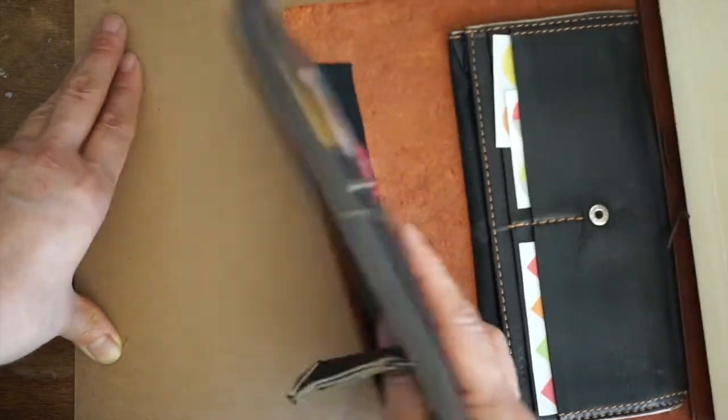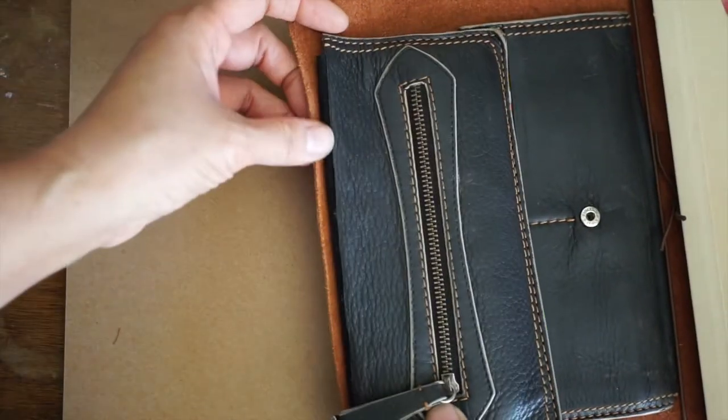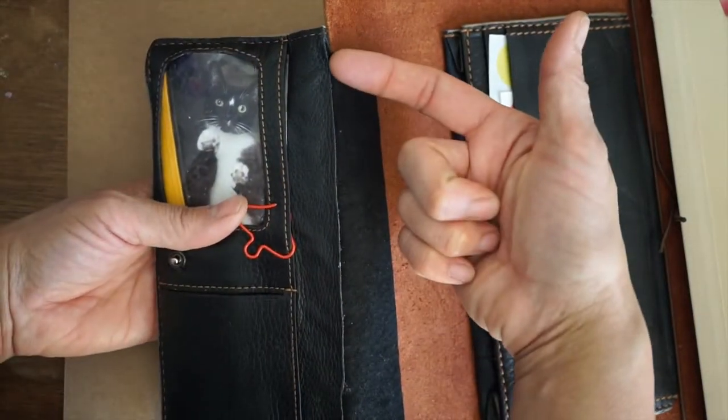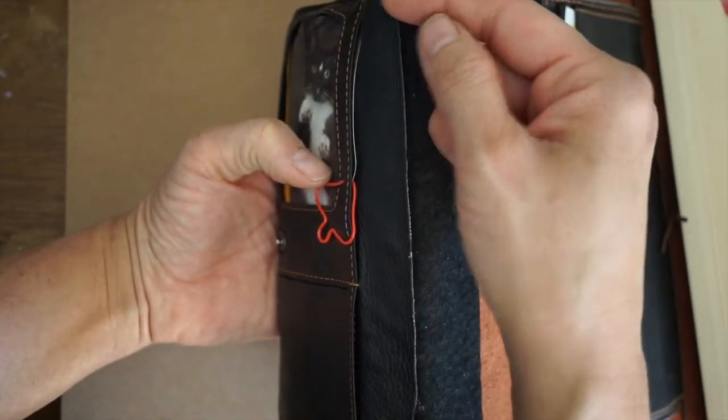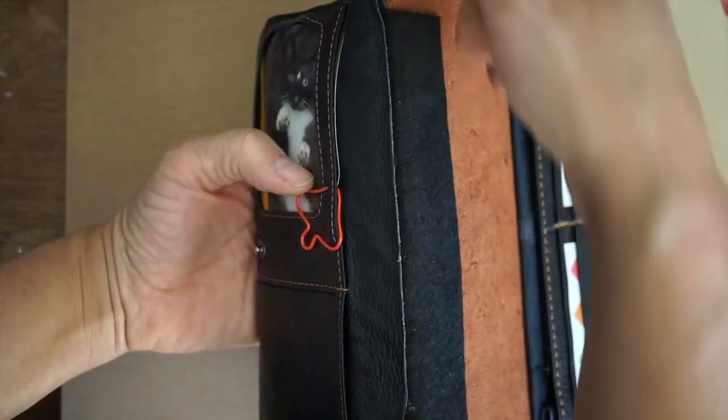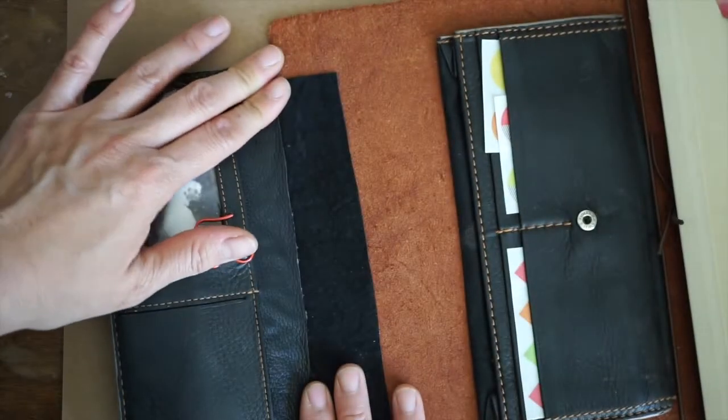And I just glued it inside this little piece of the wallet because there's two pieces of leather here. So I put glue on top and on the back and then put it inside here and then just spread it out.